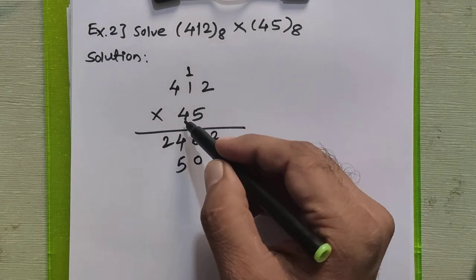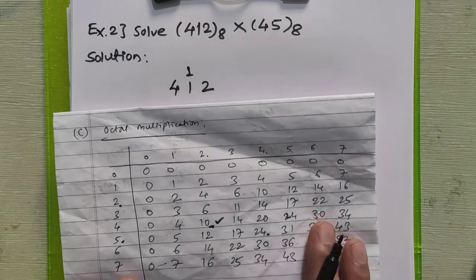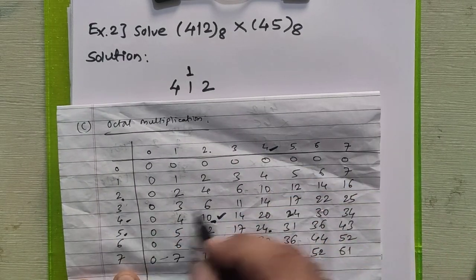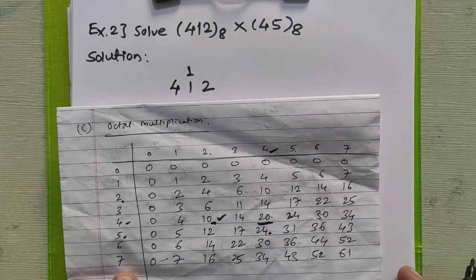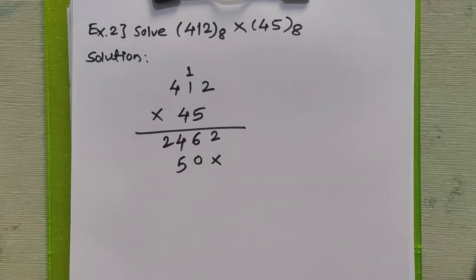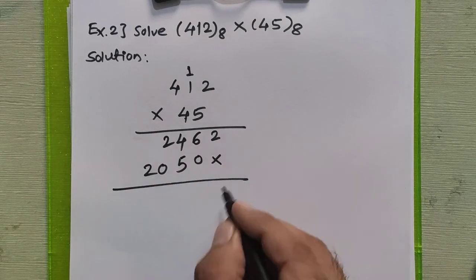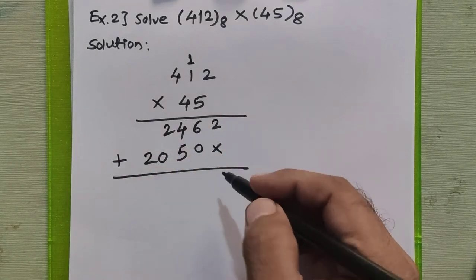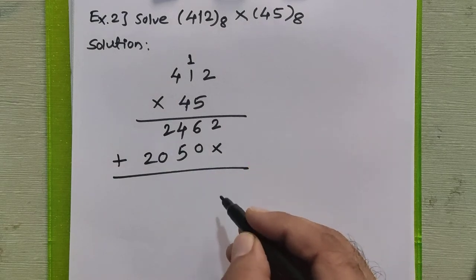Now multiply 4×4=16 decimal. In the multiplication table, 4×4=16, which in octal is 20. So we write 20 here. Finally, we add these two partial products using the octal addition rule. 2 plus 0 is 2.